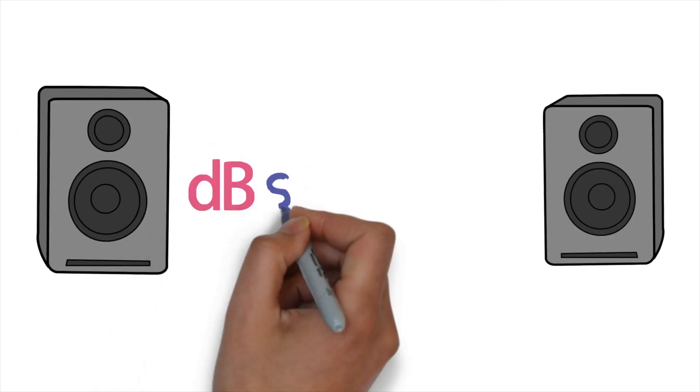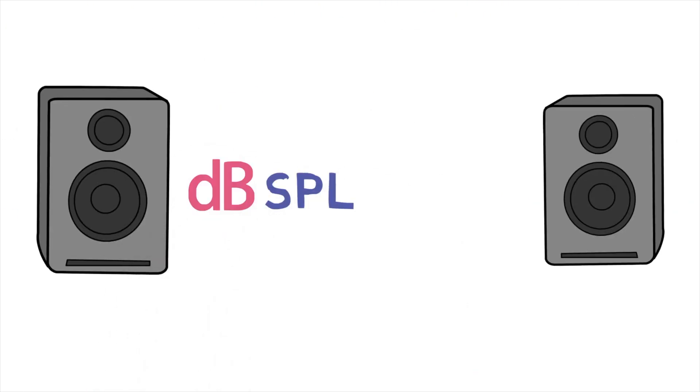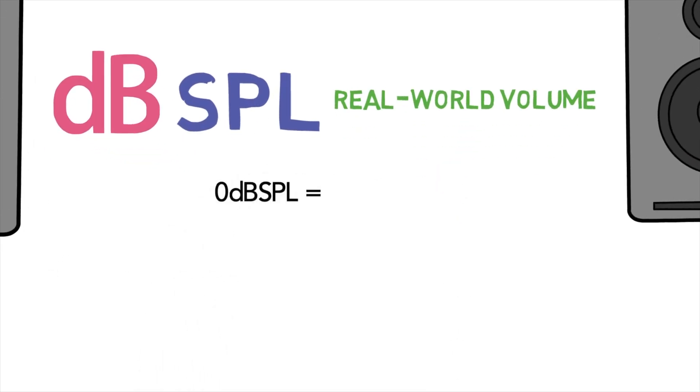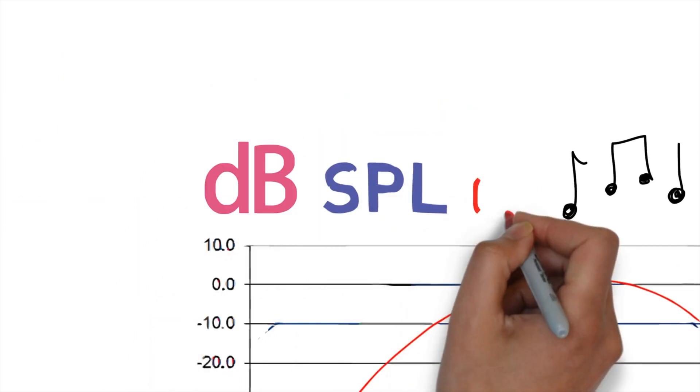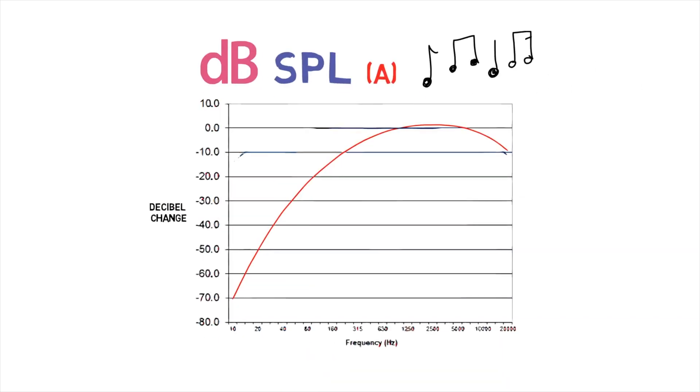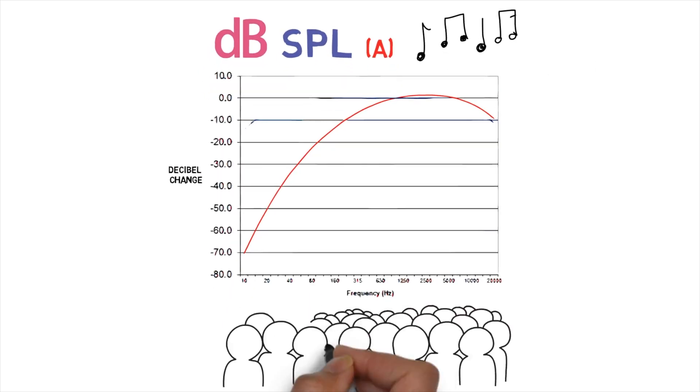Now, probably the most common one, sound pressure level, or DBSPL. This is real-world volume, where decibels are being referenced to the lowest possible volume a human can hear. Now, when talking about SPL, you have to consider weightings, the most common of which is A-weighting. A-weighting is designed to reflect the sensitivity of human hearing. Our ears aren't very sensitive at very low or very high frequencies, so the measurements are weighted to reflect this.